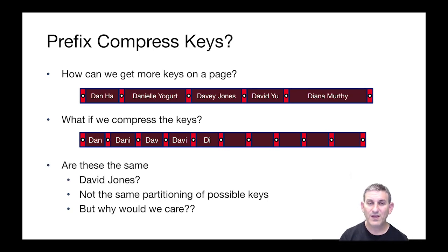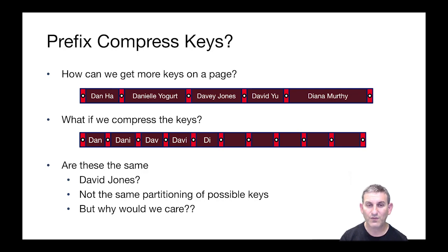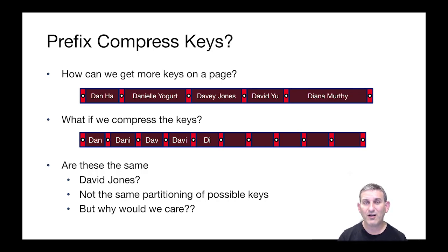Now, are these truly the same? Think about where David Jones would be located under each of these index entries. In the first case, you'd expect to see David Jones between Davy Jones, which is less than, and David Yu, which is greater than David Jones — the fourth pointer from the left of the page. In the second case, David Jones would appear between d-a-v-i and d-i, which is the fifth pointer on the page. So actually, David Jones lands in a different region of the B+ tree in the second case than in the first case — it's not exactly the same partitioning of all possible keys. But why do we care? As long as the B+ tree can take our queries and route them to the proper data, we don't really mind if this compression results in a slightly different layout of the tree. What we care about is that the tree has high fanout and that it's correct.